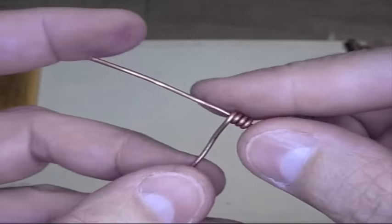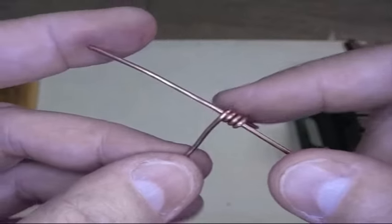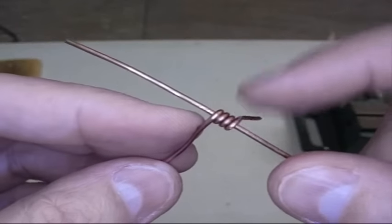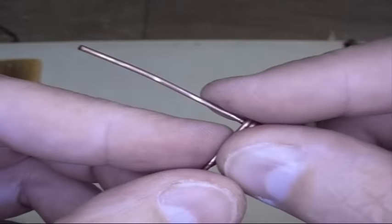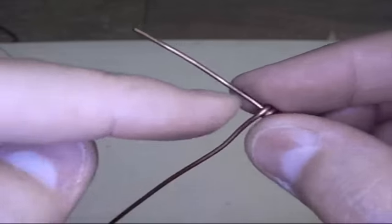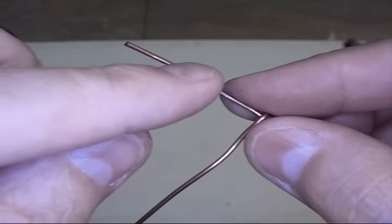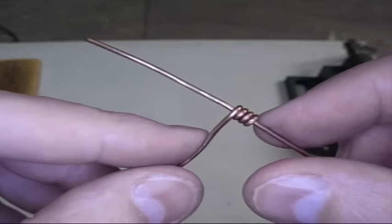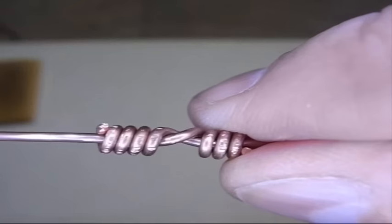So first what I do is I come down about two, inch and a half, two inches, and I start wrapping one of the wires around the other. Now what I'm going to do is I'm going to fold this one back and I'm going to wrap this one around this wire. And I'll be right back after I've done that. So here we are done.